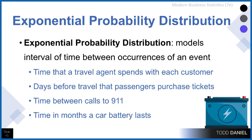It's the time that a travel agent spends with each customer, or the days before travel that passengers purchase tickets — so it's the interval of time before an event — or the time in months that a car battery lasts. Let's explore the characteristics of this exponential distribution.